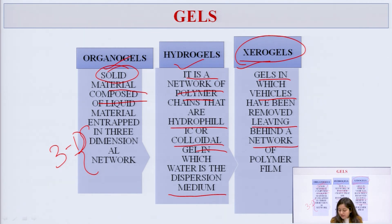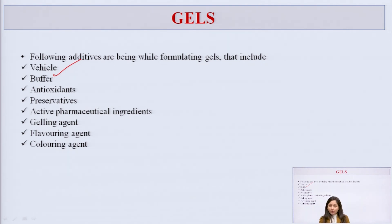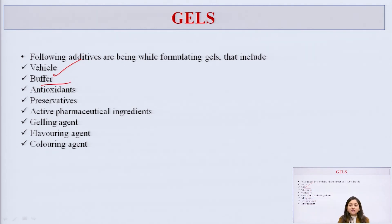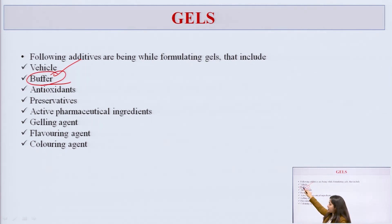When manufacturing gels, certain excipients are required. The first is a vehicle — without a vehicle, it is impossible to incorporate or transport the API into a patient's body. Next is buffer, which prevents change in pH and maintains the product's pH throughout its shelf life. For example, during manufacturing if the pH is slightly acidic, suitable buffers are added to maintain that pH over 2 to 4 years of shelf life.